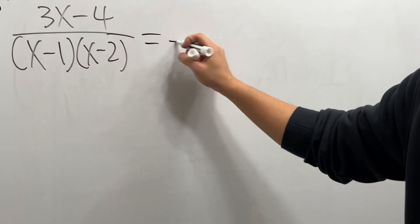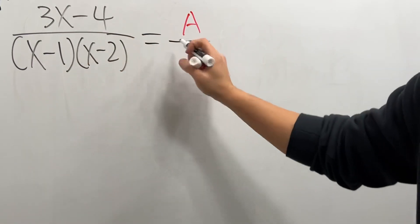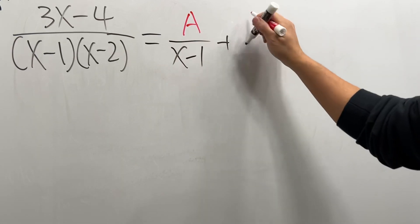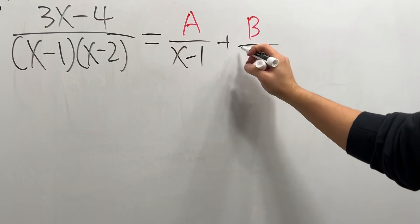We have linear factors, so we will have some number A over the first denominator plus some other number B over the second denominator, x minus 2.